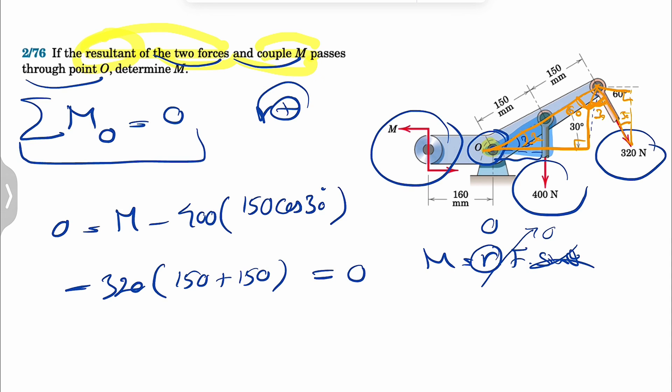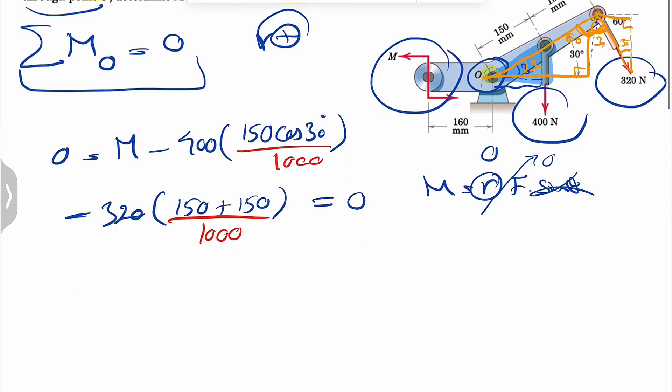You might be wondering, do we need to do the unit conversion or no? If we don't do it, our couple M is going to be newton millimeters. So let's just divide each of these by 1000 to get our couple in newton meters.